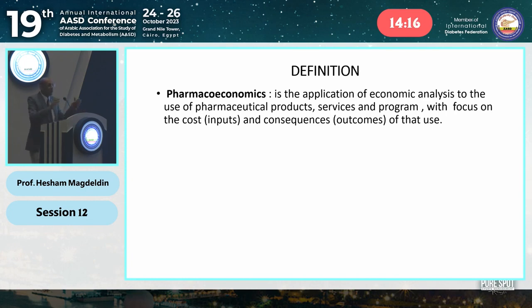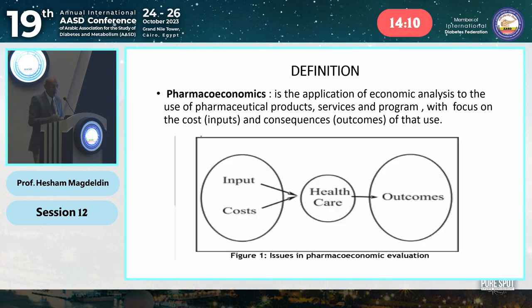We apply economic policies on health cost types. We have two arms: input, which are the costs, and outcomes, which are the consequences.